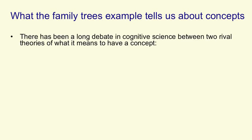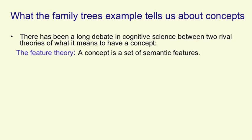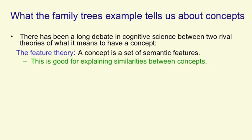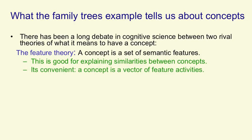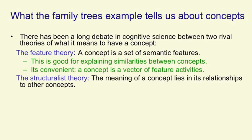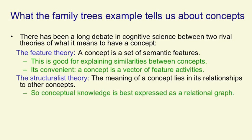There's been a long debate between two rival theories of what it means to have a concept. The feature theory says a concept is a big set of semantic features. This is good for explaining similarities between concepts, and it's convenient for things like machine learning, because we like to deal with vectors of activities. The structuralist theory says that the meaning of a concept lies in its relationships to other concepts, so conceptual knowledge is best expressed not as a big vector, but as a relational graph.